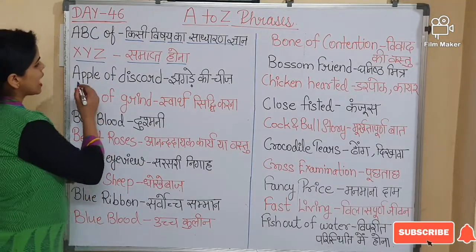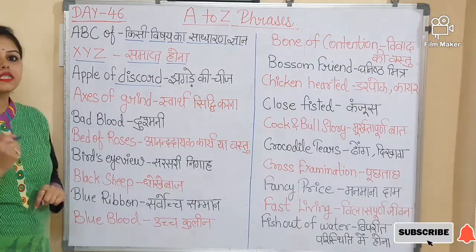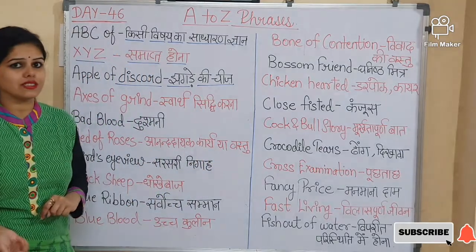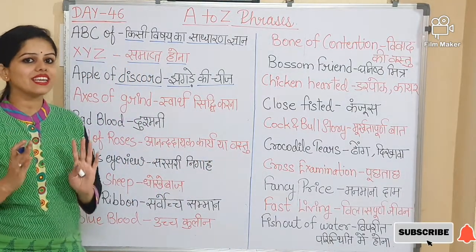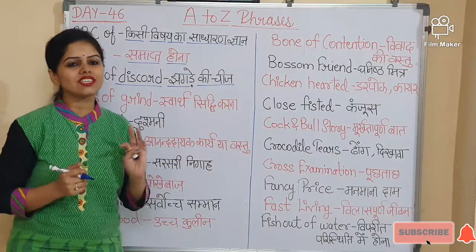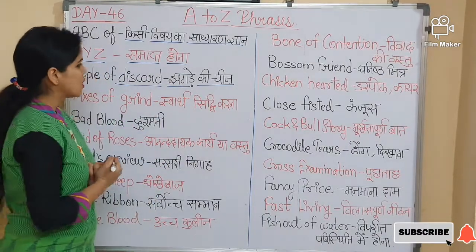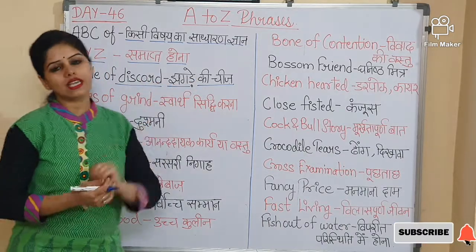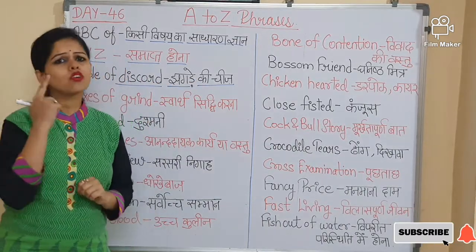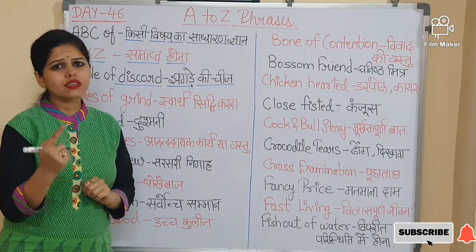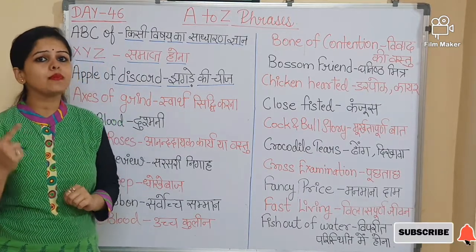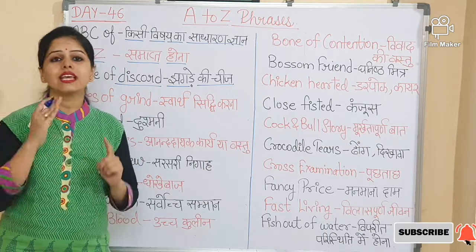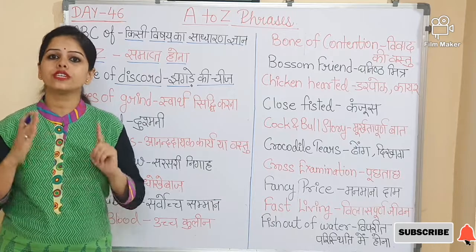Now third is 'Apples of discord'. Apples of discord means jhagde ki cheez — a source of dispute or conflict. When we think of siblings, this phrase comes to mind naturally. So the sentence is: One chocolate among siblings is an apple of discord.